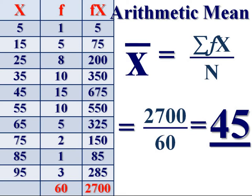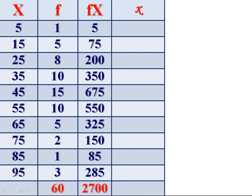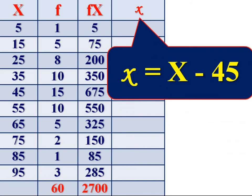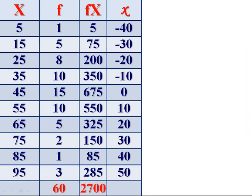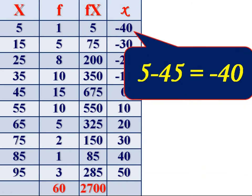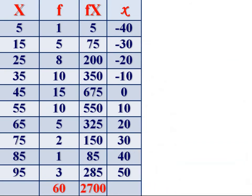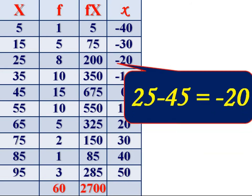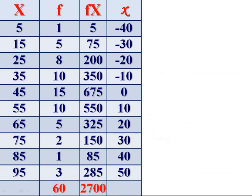After finding arithmetic mean, find the deviation of values from mean. Small letter x, x is equal to X minus mean 45. First, 5 minus 45 is minus 40, 15 minus 45 is minus 30, 25 minus 45 is minus 20 and so on. Minus 10, 0, 10, 20, 30, 40 and 50.